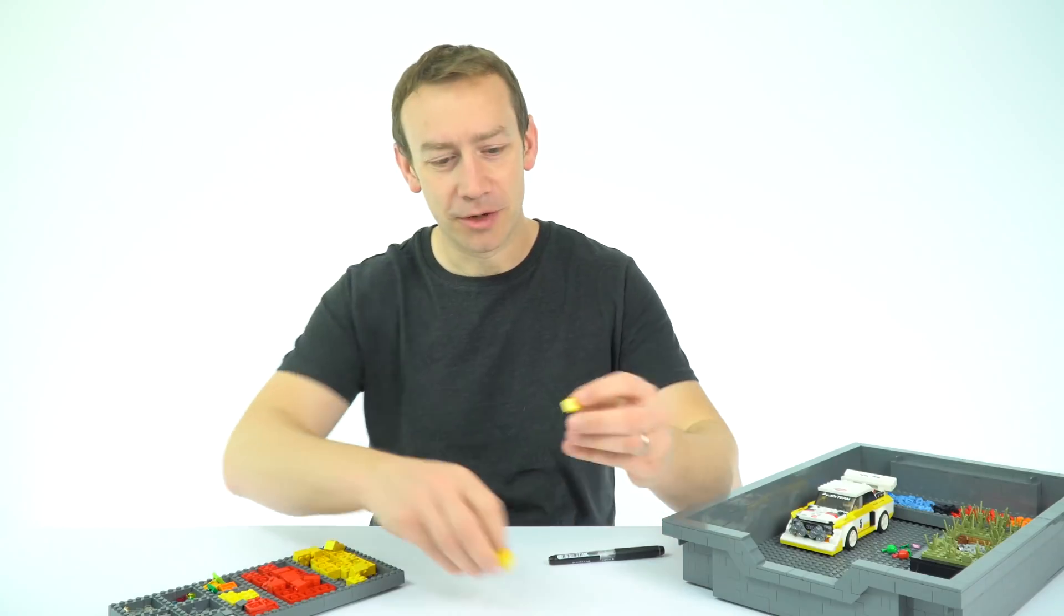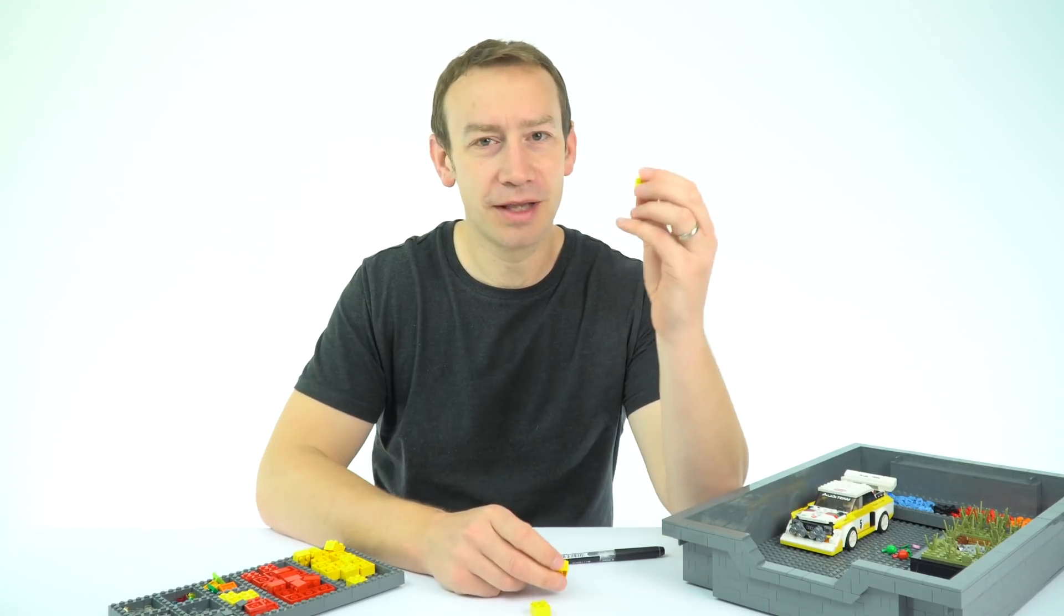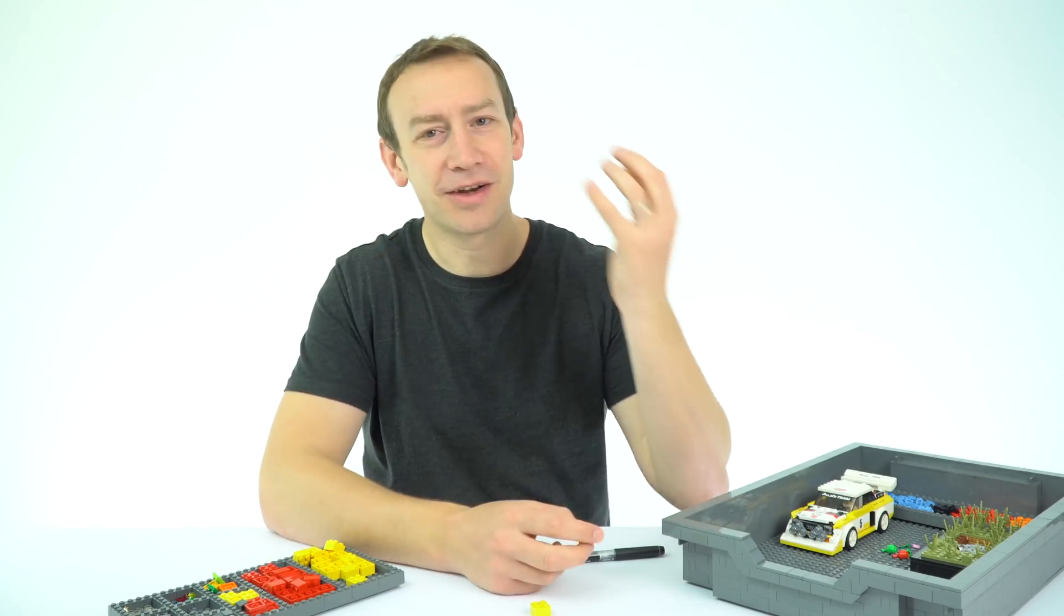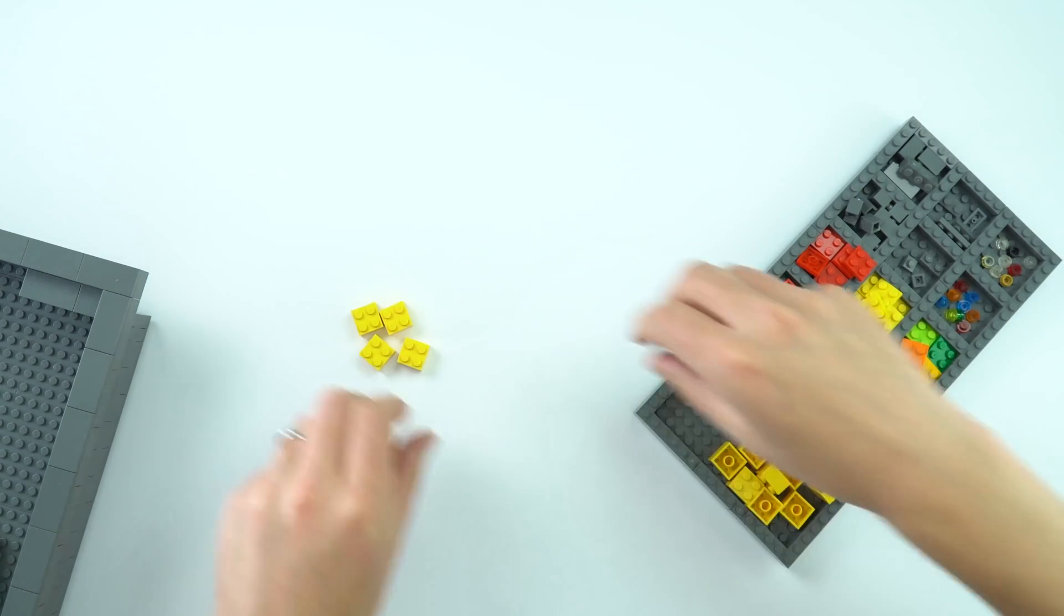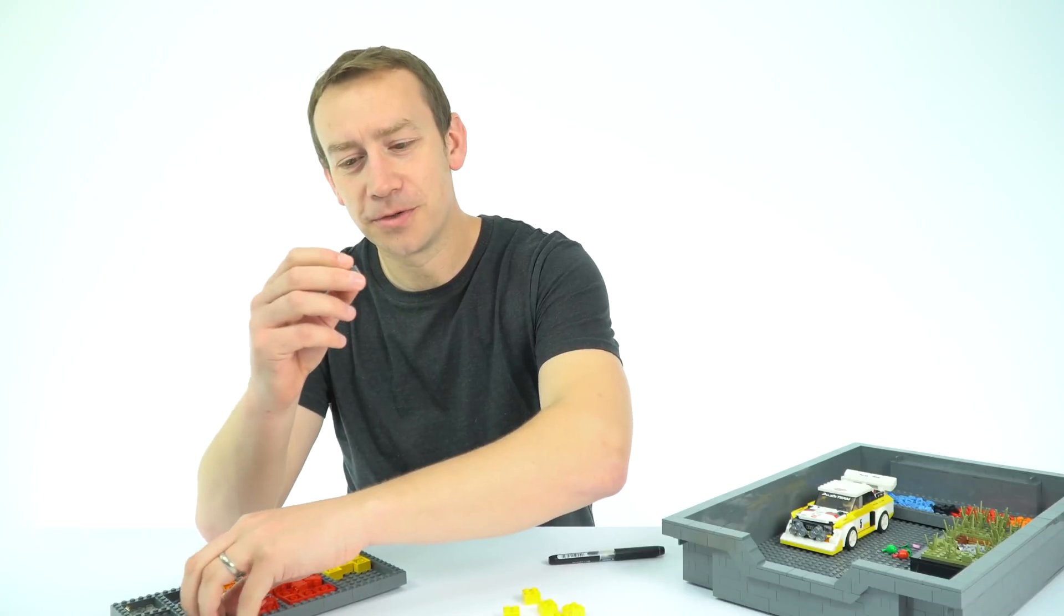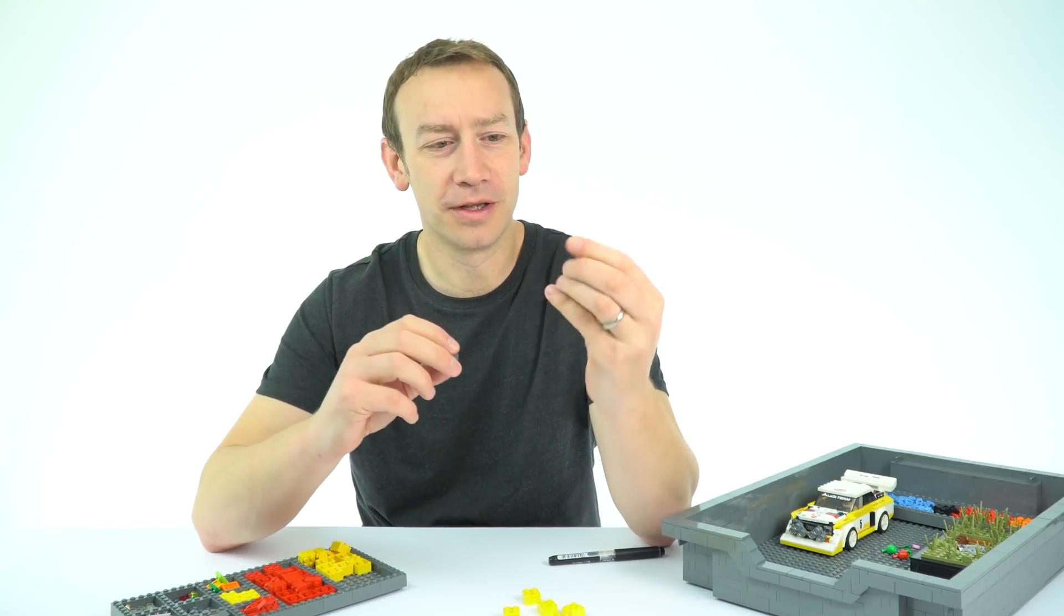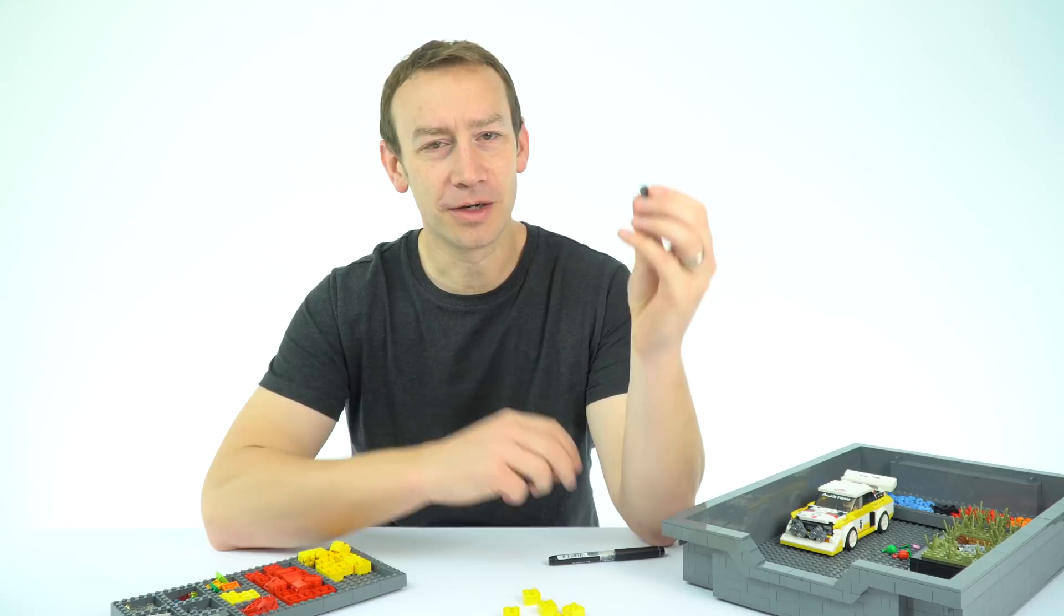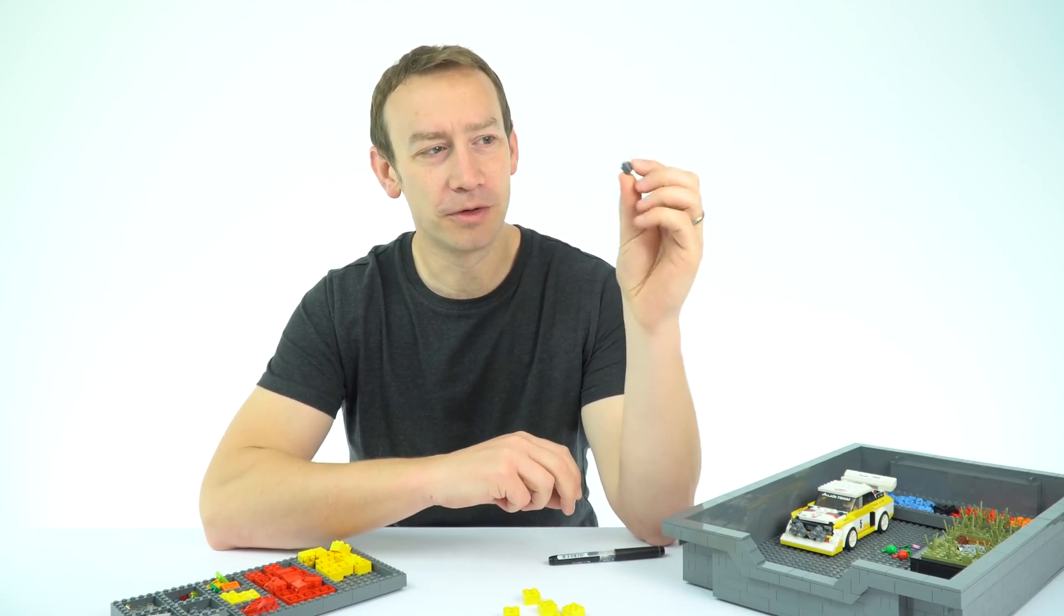Now inside the atom there are positive charges and I'm going to represent these with these two by two yellow bricks. I mean why not, they don't actually have any colors, but these are a really good way to represent these positive charges. And in the early part of the 20th century they discovered the electron, these small negative particles. So I'm going to represent those by these one by one grey pieces.